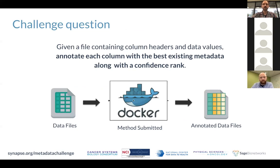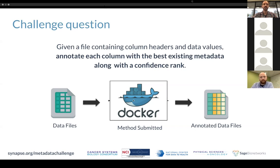In this challenge, the question we're asking is: given a file that contains column headers and dataset values — essentially a table — annotate these headers and data values with the best existing metadata along with a confidence rank, using standard metadata from a database. Your submission is a Docker container that takes a table with headers, columns, and data values as input, and outputs your predicted annotations.